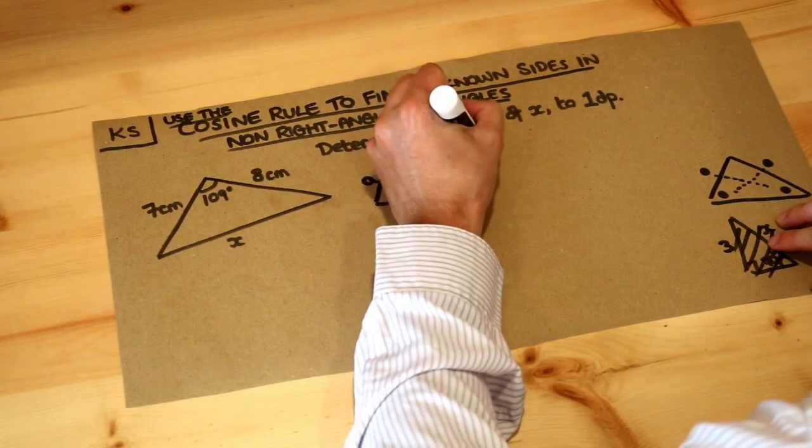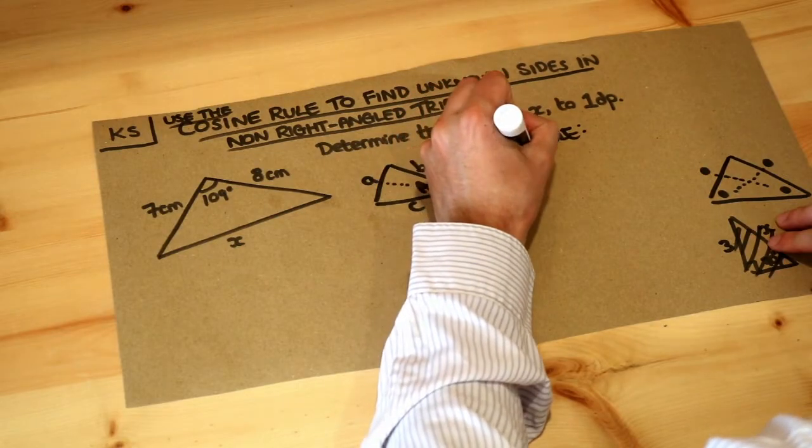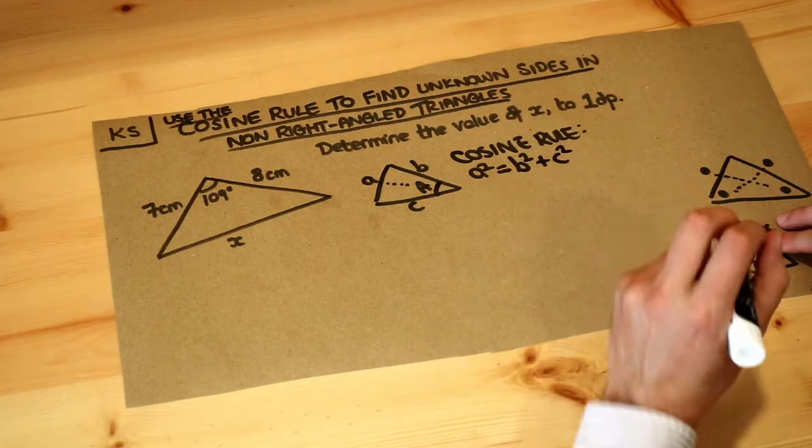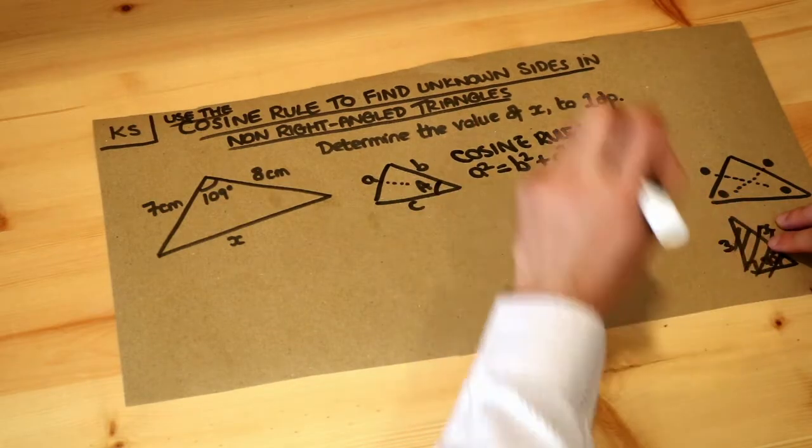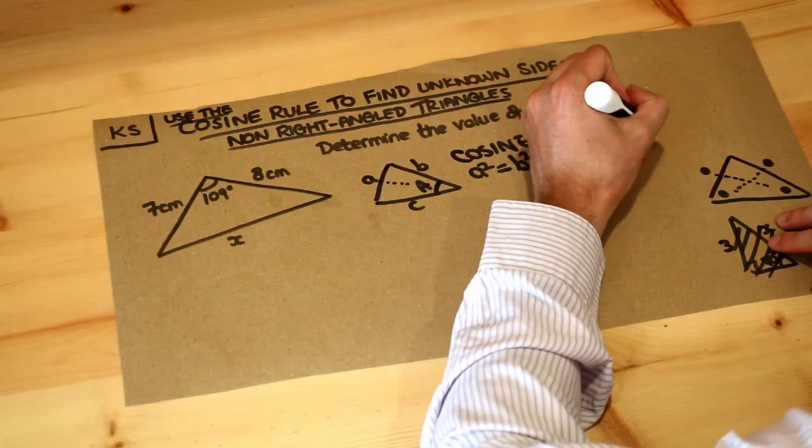Then the cosine rule is this: a squared is equal to b squared plus c squared. That looks a bit like Pythagoras' theorem, but because this is not a right-angle triangle, there's an adjustment, so it's minus 2bc cos capital A.